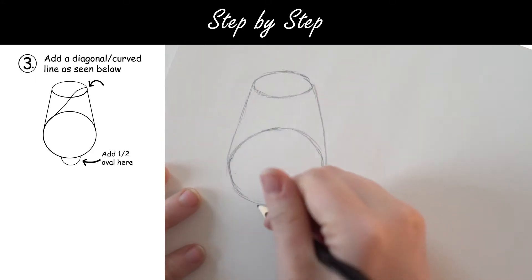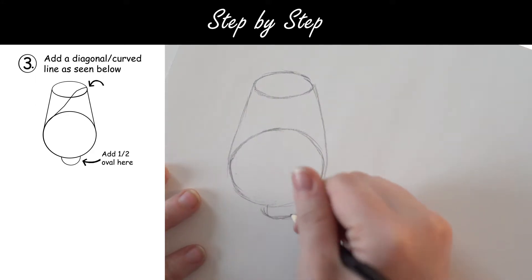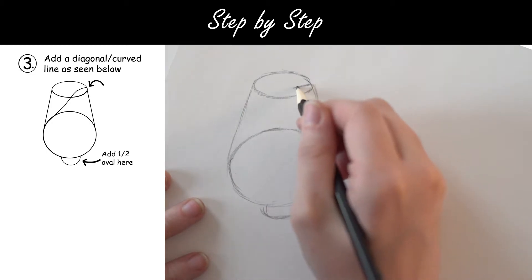Step 3. Add a diagonal, curved line as seen below. Also add half an oval at the bottom.